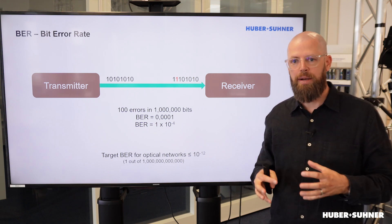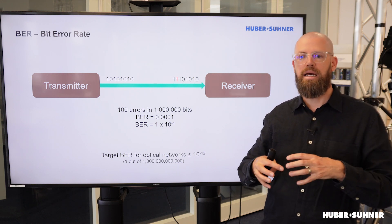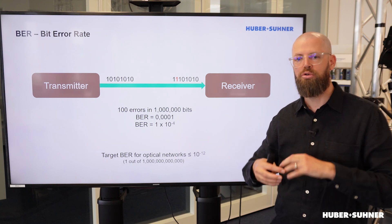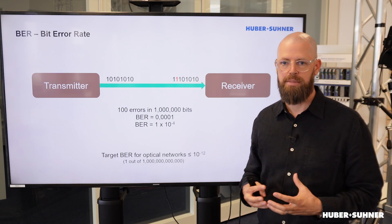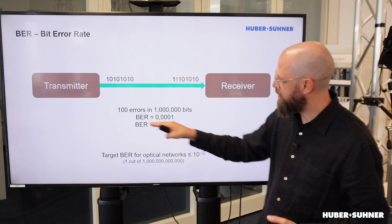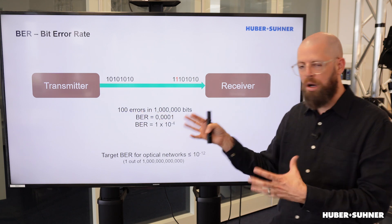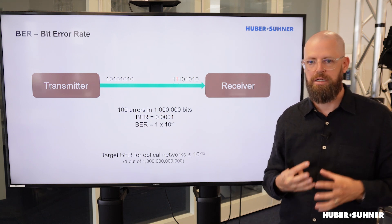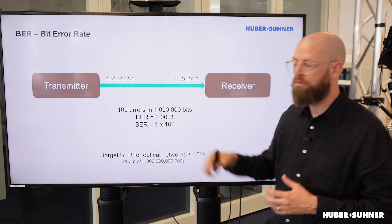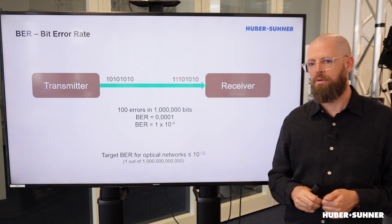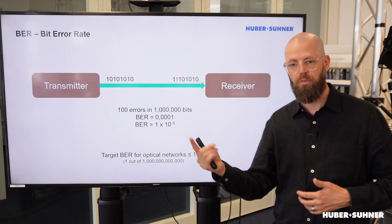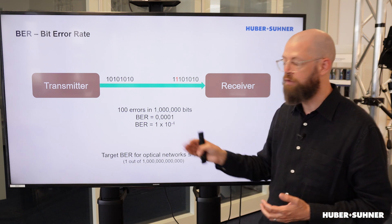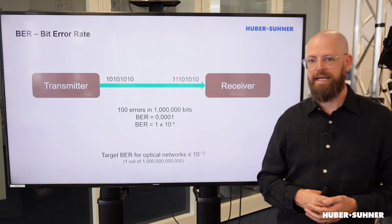The bit error rate is the number of errors in relation to the total number of transmitted bits. So in other words, if we have 100 errors out of a million transmitted bits, that means we will have a bit error rate of 0.0001, or put differently, a bit error rate of 10 to the negative 4.